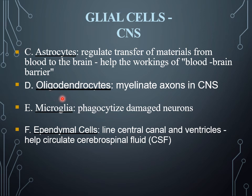Oligodendrocytes are present in the myelinated axons of the central nervous system. Microglia are those glial cells that are involved in phagocytosing damaged neurons. Ependymal cells are present in the lining of the central canal and ventricles, and are involved in the circulation of cerebrospinal fluid.